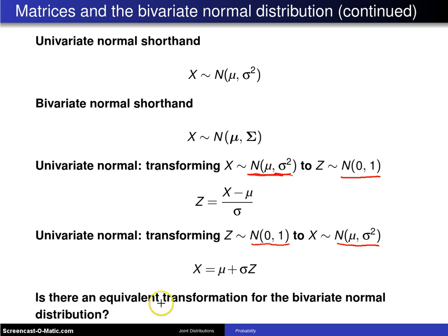The question here, is there an equivalent transformation for the bivariate normal distribution? If there is, then that can be used to generate random variates because this in one dimension can be used to generate a random variate x having the normal distribution by simply taking a standard normal, multiplying it by its standard deviation sigma, and adding mu. So the next slide will be a search for an equivalent transformation in the bivariate normal case.